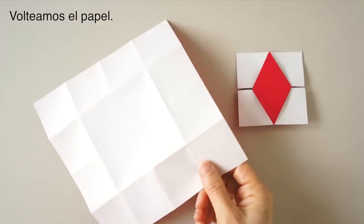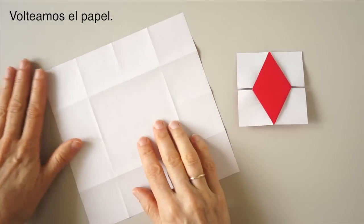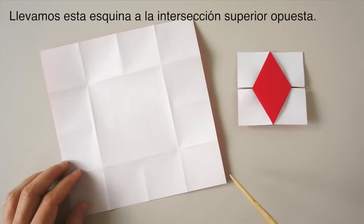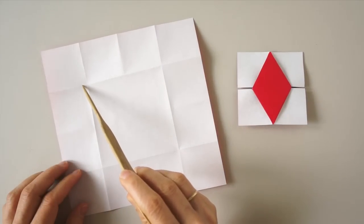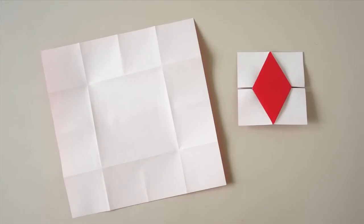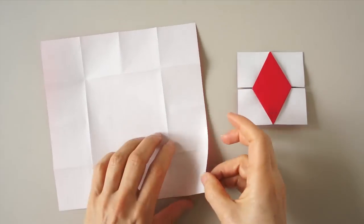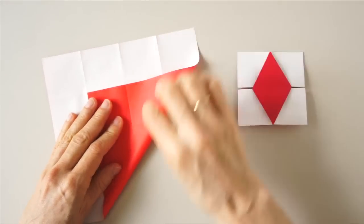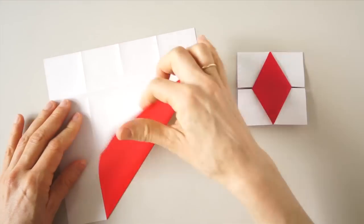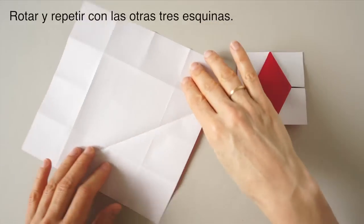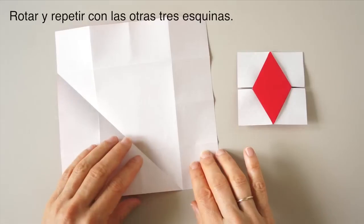We are going to bring this corner to this intersection, and we create a fold here. We rotate and repeat on the other three sides.